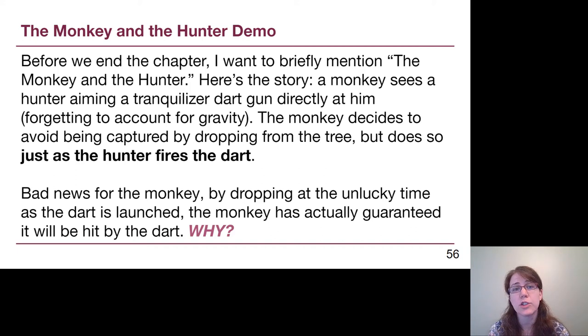The last couple of slides, I want to end the chapter with a mention of a very common story slash demonstration that happens in physics departments called the monkey and the hunter. The idea is there's a monkey in a tree and a hunter aiming at it, and the hunter aims a tranquilizer dart directly at the monkey. He's completely forgotten about gravity. The monkey, in order to try to evade capture, lets go of the branch he's on immediately as the hunter fires the dart. By dropping as soon as the dart is launched, the monkey has actually sealed its own fate. It should have just stayed in the tree.